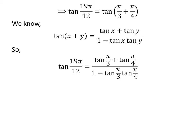Application of the above identity gives us tangent of 19 times pi upon 12 is equal to tangent of pi upon 3 plus tangent of pi upon 4, upon 1 minus tangent of pi upon 3 times tangent of pi upon 4.